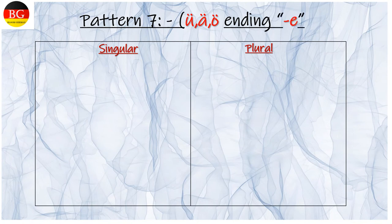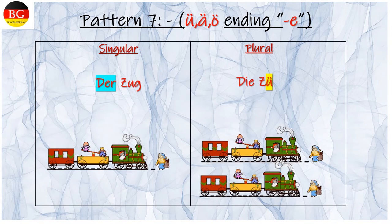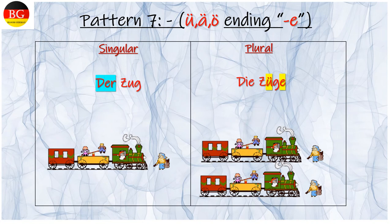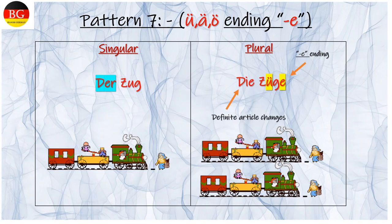Pattern 7: Stem vowel change, ending E is getting added. Zum Beispiel: der Zug, die Züge. The trains. Ending E is getting added. Definite article changes and stem vowel is getting changed.